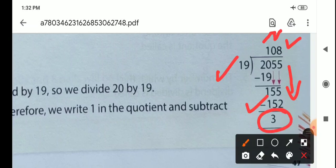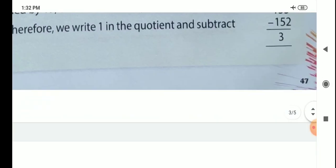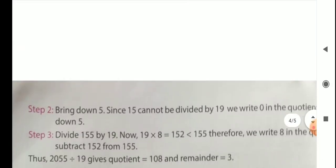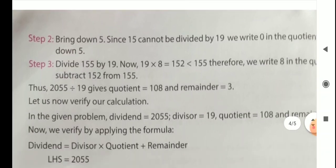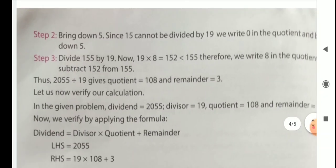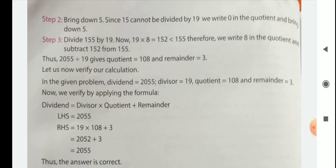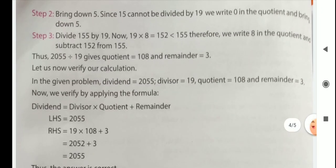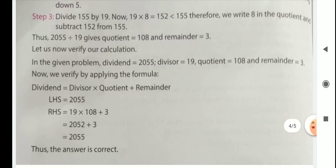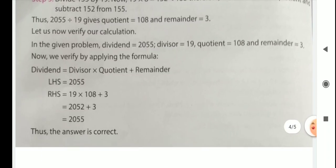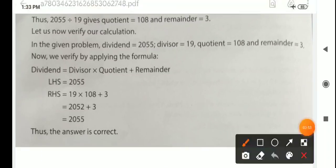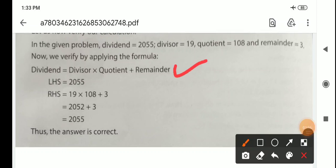So 108 is the quotient, 3 is the remainder. Then what we do? Then we verify our division is correct or not. To prove our division is correct or not, we just follow one formula.